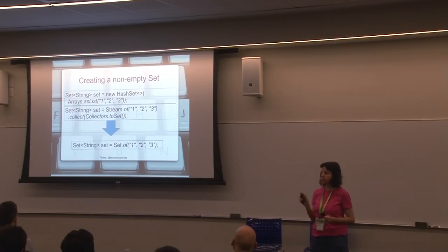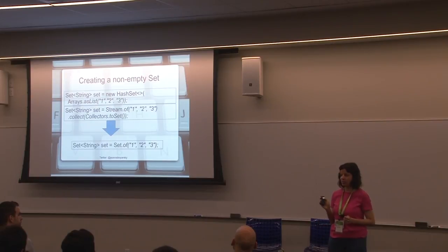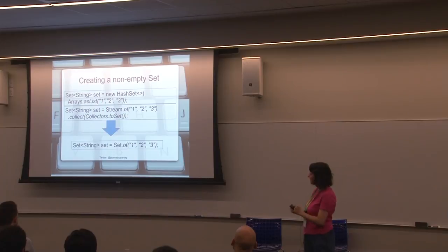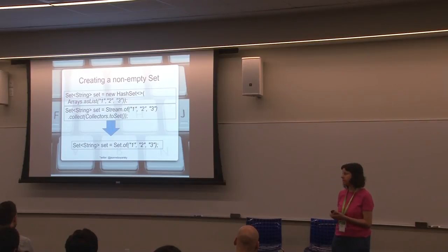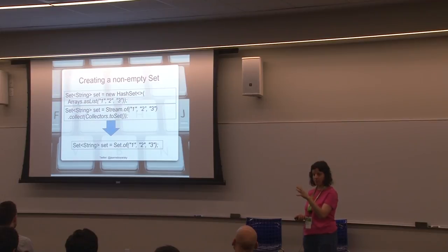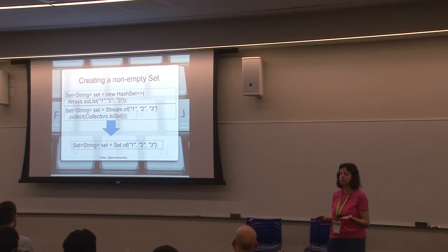On a related note, this entire presentation is on SlideShare, so no need to take notes or pictures of everything that goes by. So set of string, set of, and the list of arguments. There are 11 method signatures, 1 through 10 parameters, and a var args in case you want to pass more. That allows the code to be optimized for the common case. Please don't do that. It's ugly.